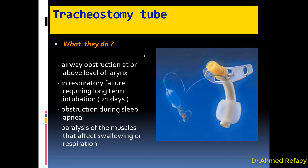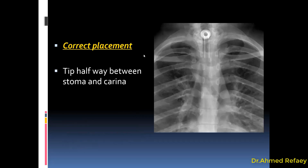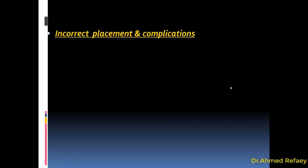Regarding the correct placement of the tracheostomy tube: the tip should be halfway between the stoma and the carina. As you see here, this is the stoma, this is the carina, and this is the tip of the tracheostomy tube — this represents the normal or correct placement.